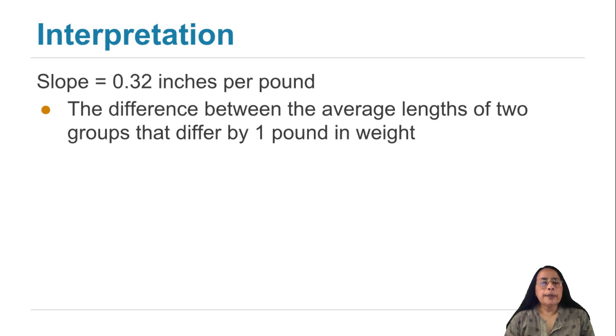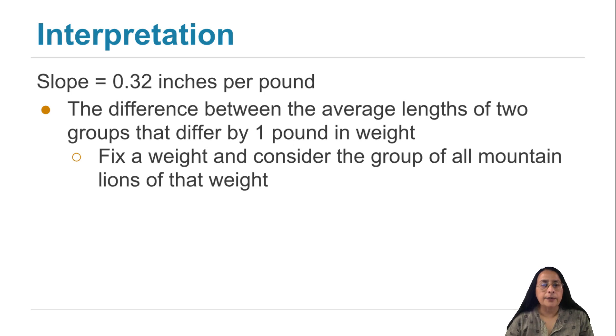The slope is the difference between the height of the line at one point and another point that is one pound away. So it is a difference between the average lengths of two groups that differ by one pound in weight. And to make that clearer,